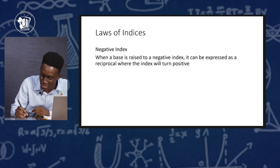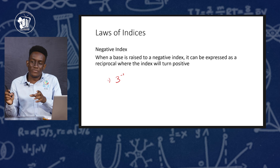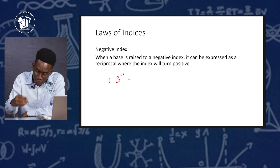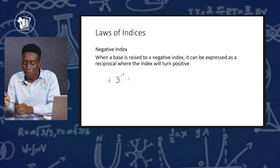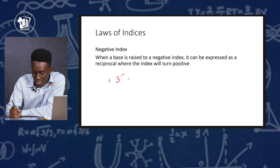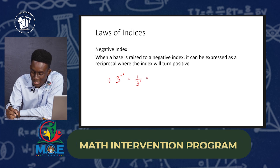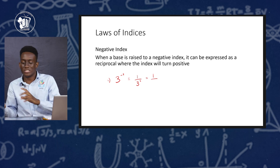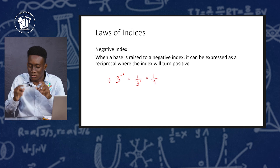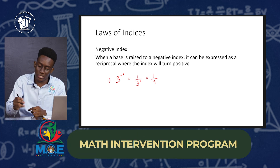First example: 3 raised to the negative 2 power. We flip the 3 because it is being raised to the negative power, so it becomes 1 over 3 to the positive 2 power. Then 1 over 3 squared is 1 over 9, since 3 times 3 is 9. So 3 raised to the negative 2 power simplifies to 1 over 9.